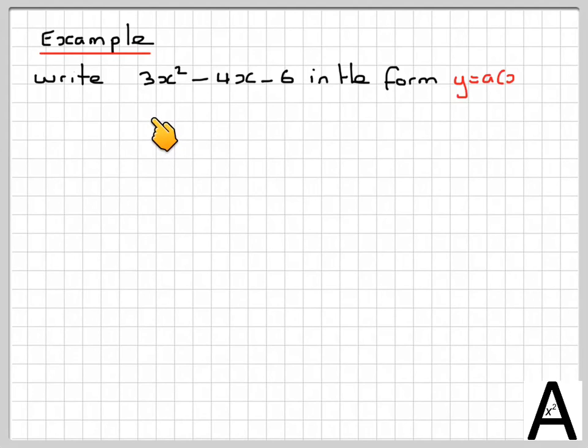In this video we will take a harder example and do the same process, and we'll look at an alternative form of doing it, a different way of doing it. So we've got 3x squared minus 4x minus 6 and we want to write it in the form y is equal to a brackets x minus h all squared plus k.